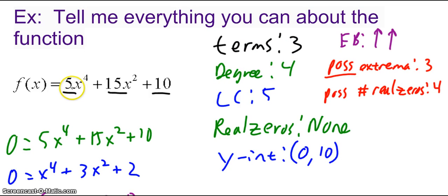So here we can see we have three terms separated by addition. The degree is 4. That's the largest exponent. The leading coefficient is 5, the coefficient in front of the term with the highest exponent. Therefore, my end behavior is up left, up right, because the degree is even and the leading coefficient is positive.